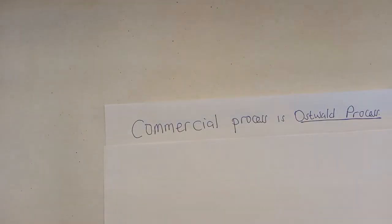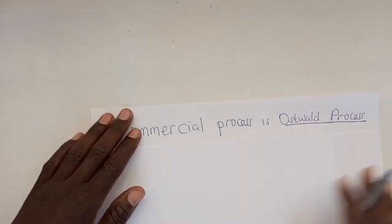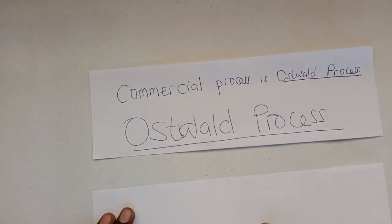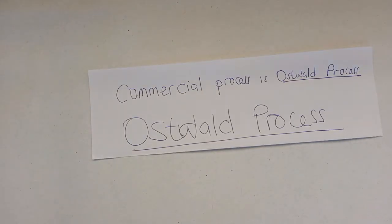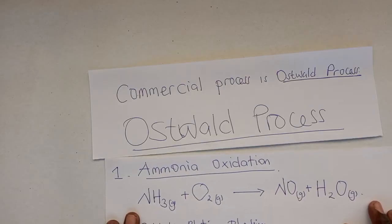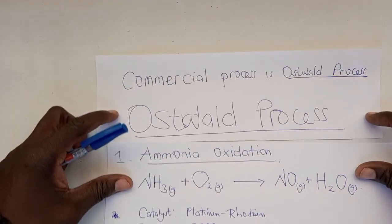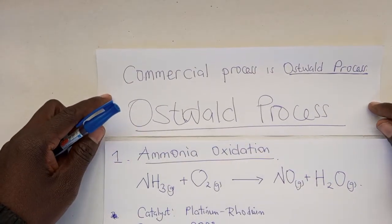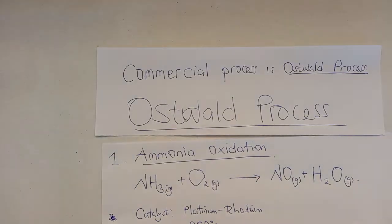This is the commercial method or commercial process of preparing nitric acid. What is the Ostwald Process about? It involves quite a number of steps, which are basically three. The first step is known as ammonia oxidation.